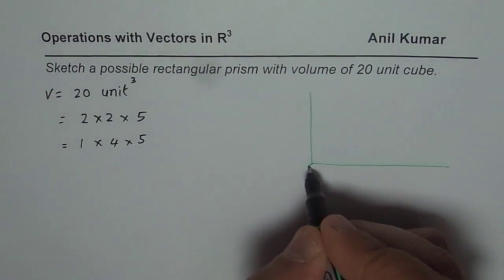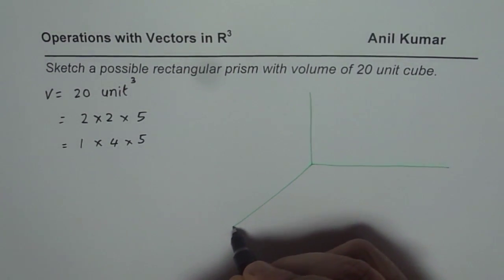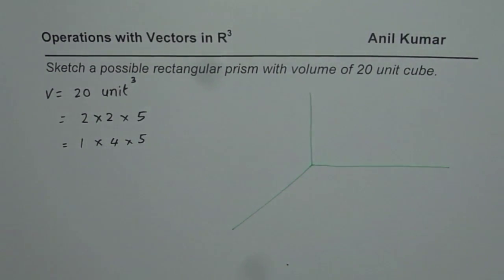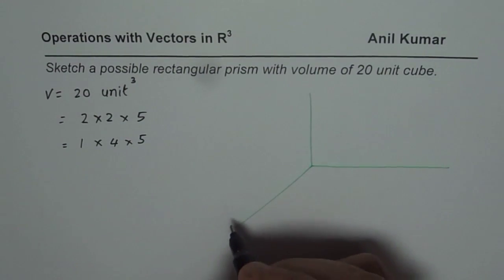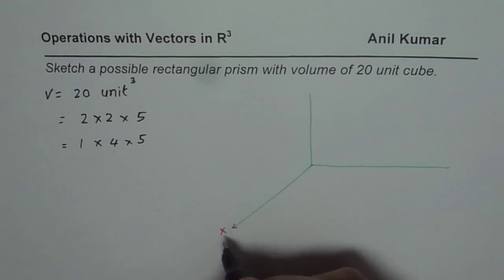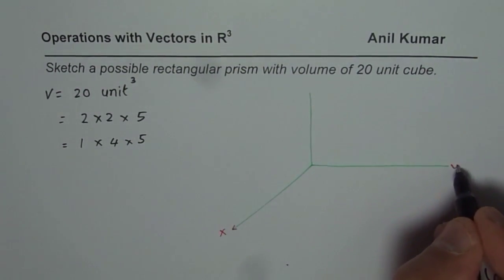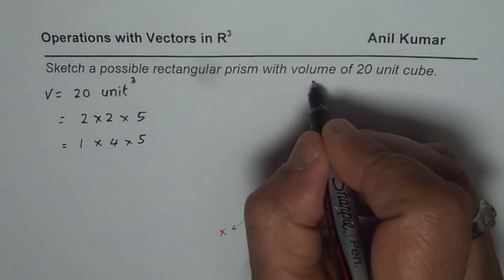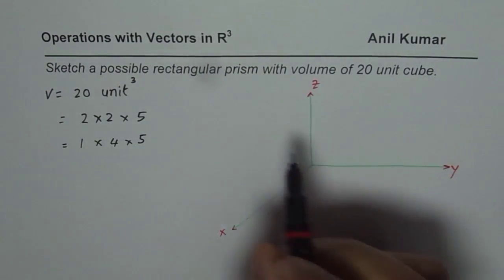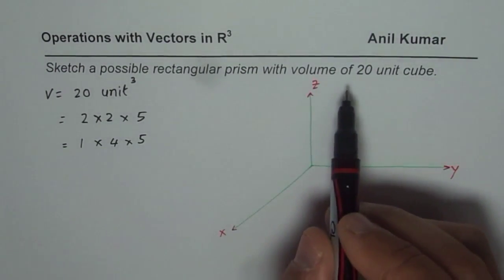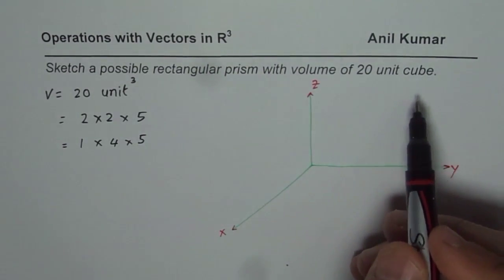I'll use one of these dimensions to sketch a vector in R3. What we have here is 3D space represented by the x, y, and z axes. So that is my x, y, and z axis, and we have a rectangular prism with a volume of 20 unit cubes.